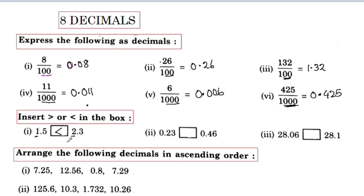1.5 is less than 2.3. Here we have 0.23 and 0.46. Here we have two places to the left. We check the decimal point on the left — here we have 4, and here we have greater than this number. Here we have 1 digit.